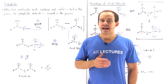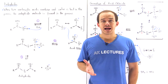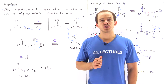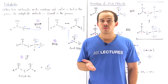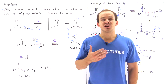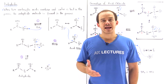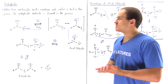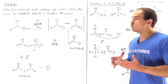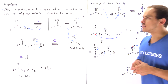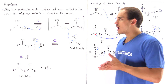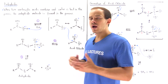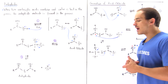When two carboxylic acids combine and in the process a water molecule is lost, we form a compound known as a carboxylic anhydride. In this lecture we're going to discuss how we can form the carboxylic anhydride from our carboxylic acid as well as the acid chloride.